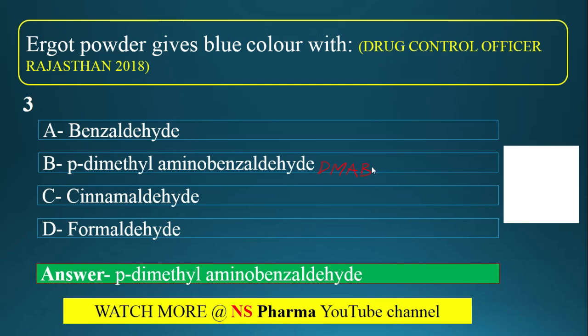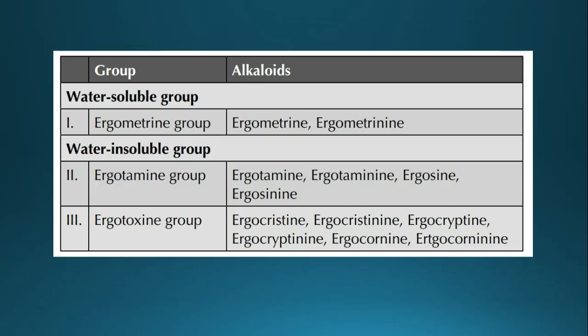Before moving to question 4, one important point: the chemical constituents inside ergot are divided into two groups — water-soluble and water-insoluble. The water-soluble group is called the ergometrine group. The water-insoluble group consists of the ergotamine group and ergotoxin group.